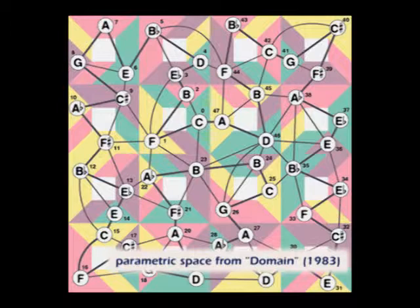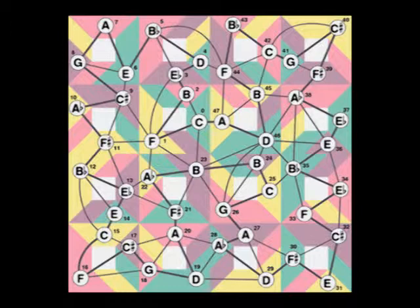Domain in 1983 was a graphical score performed by musicians associated with Phonos and the Universitat Nova in Barcelona. Instrumentation, pitch class and sequence, large and small-scale durations and phrasing were all determined by the parametric spaces derived from a particular Greco-Latin square.